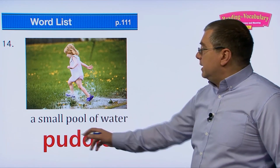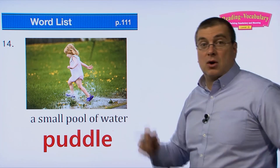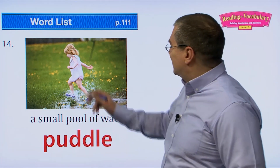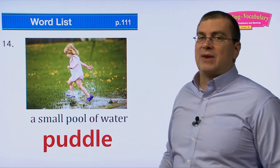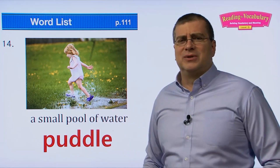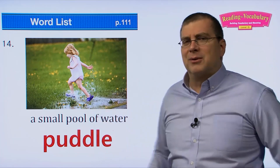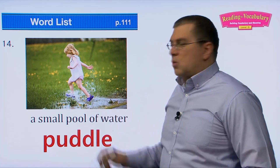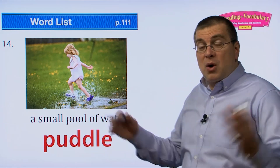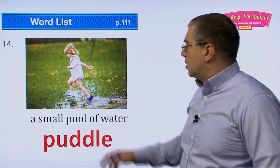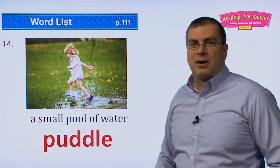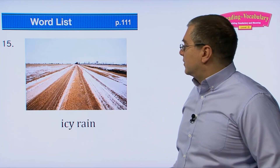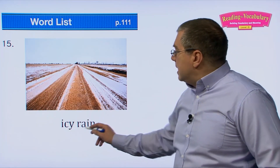Number fourteen: a small pool of water — a puddle. You might like to go splashing through puddles! This girl is wearing rubber shoes — no problem, have fun! But if you're wearing regular shoes and socks, your mother will be angry. Kids love running through puddles of water.